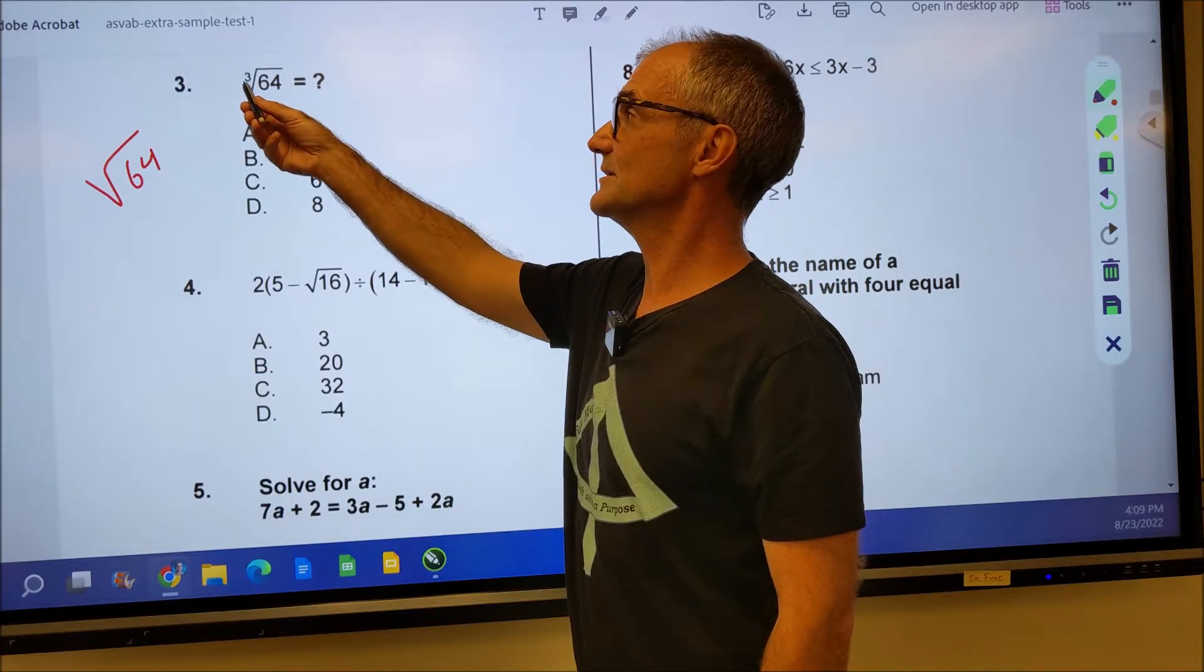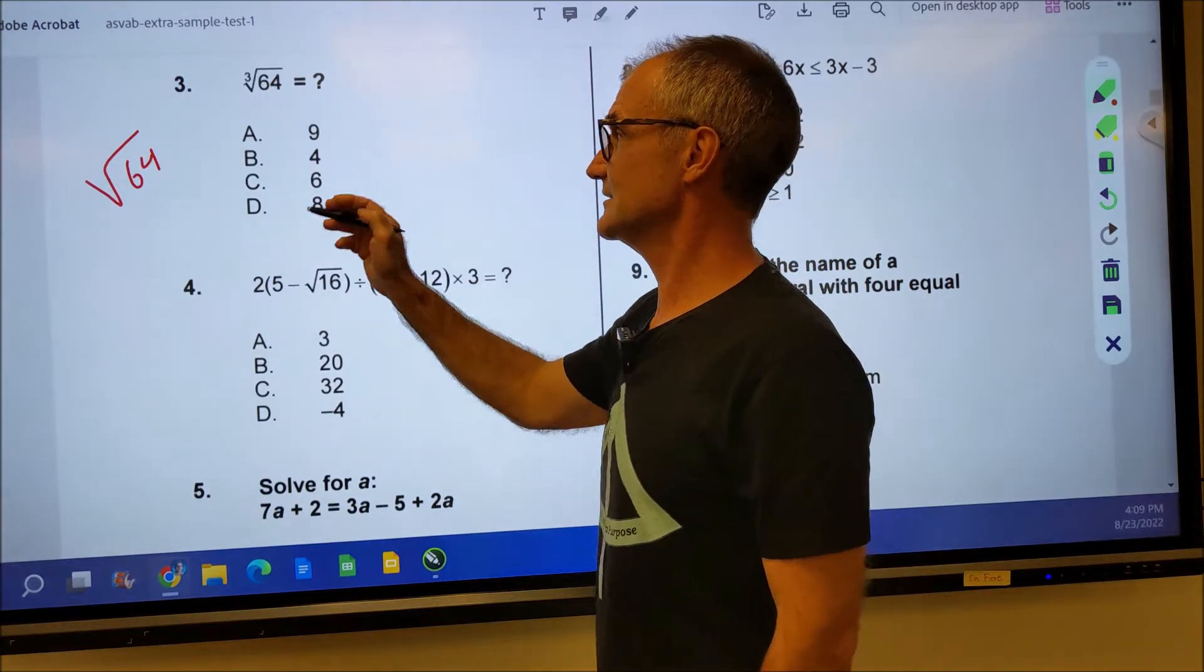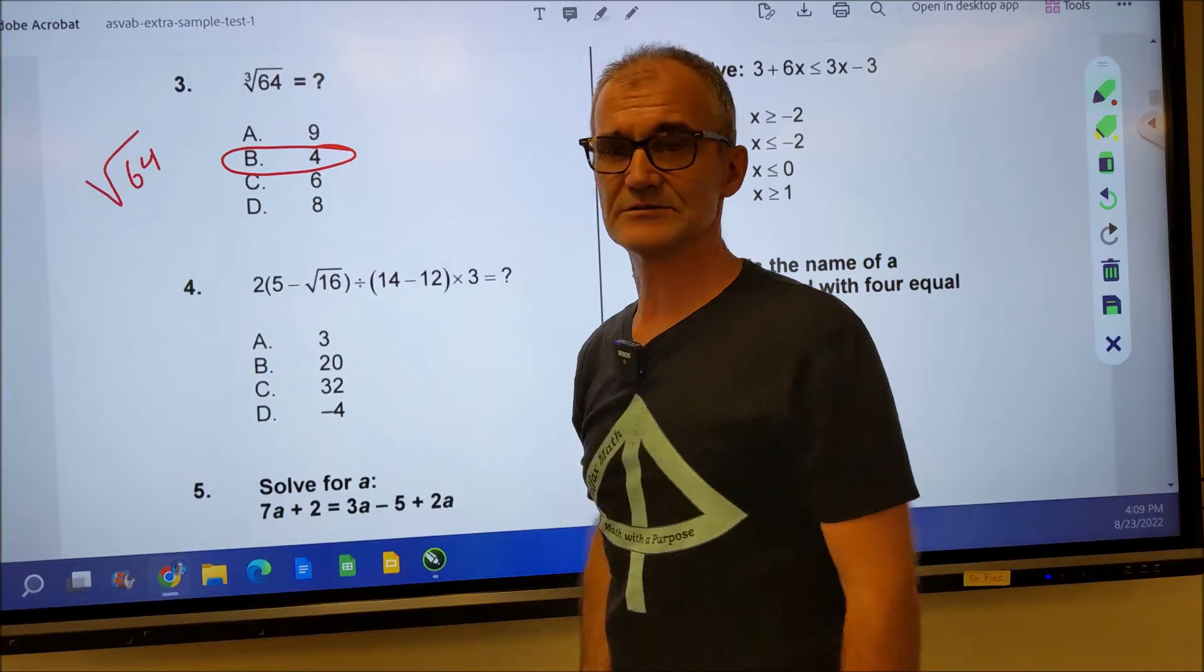So I could see four times itself three times or four to the third is 64. Four to the third, the cube root of that, the cubes cancel. And it leaves me with four. So my answer is B right there.